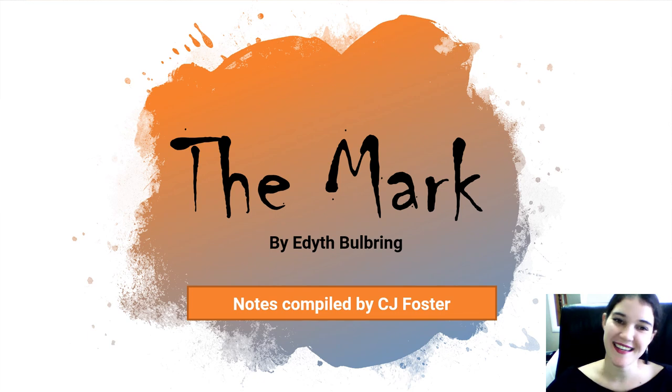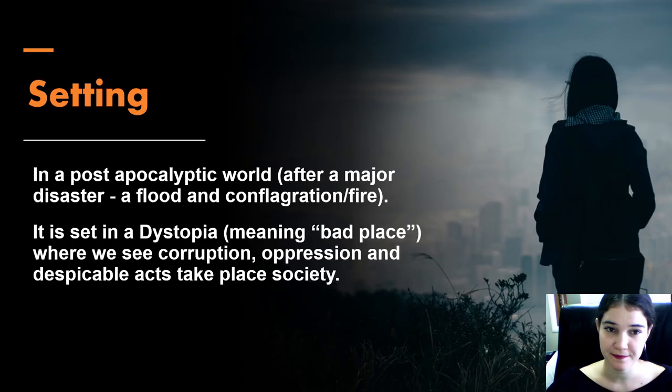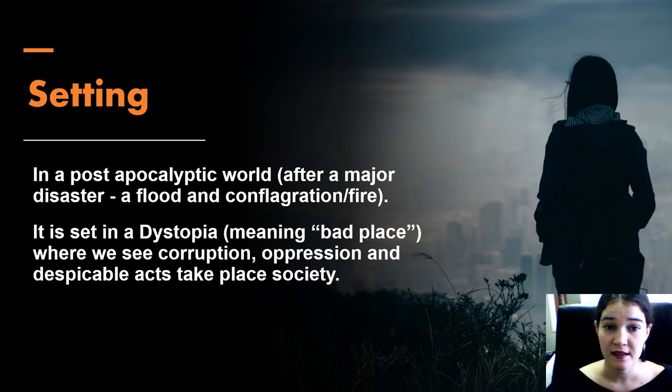Hi guys, in this video we will be looking at the setting of the novel The Mark by Edith Bulbring. Setting refers to the place or surroundings where an event takes place. In this case, the novel takes place in a post-apocalyptic world after the earth was destroyed by a flood as well as a massive fire. So imagine a world where everything is burnt and damaged and everyone is fighting for survival.